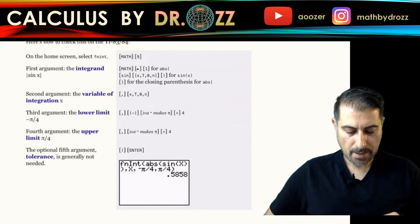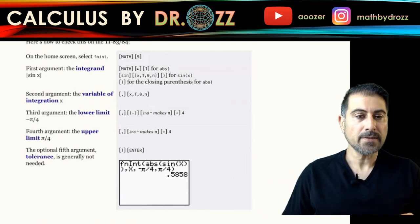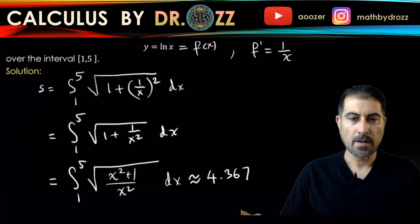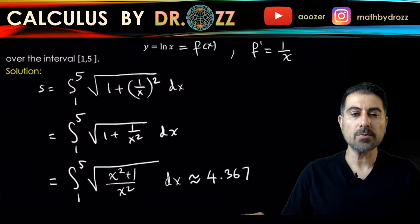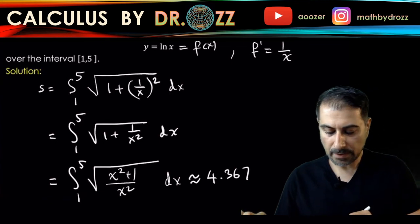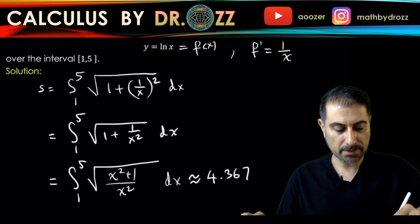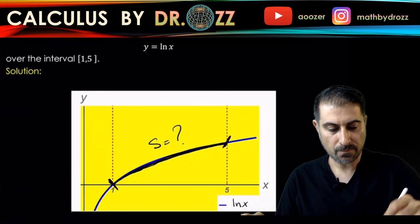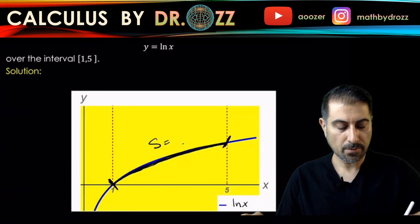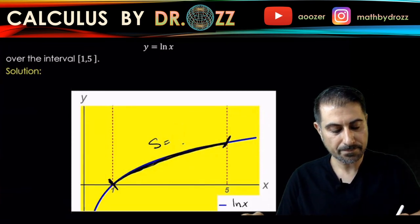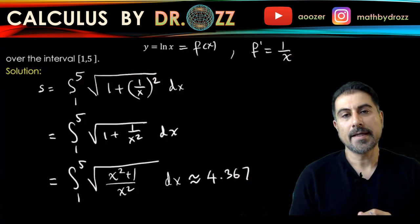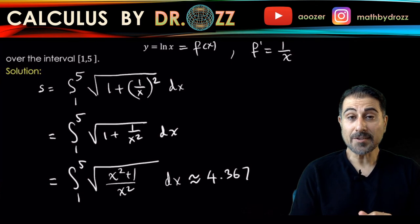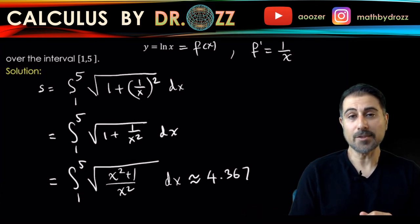All right. I think that's pretty much what it is. And numerically, we got the arc length to be like 4.367 and that's exactly what we're going to place it in here at 4.367. Okay. All right. Thanks for watching. This is the end of the video. I'll see you in another video. Bye.